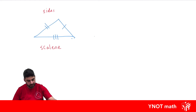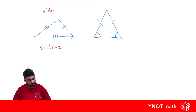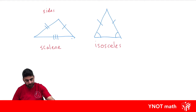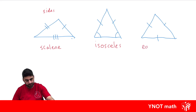Where two sides are the same and the two base angles are also equal, this is an isosceles triangle. A triangle where all the sides are equal and all the angles are equal is an equilateral triangle. All the angles in an equilateral triangle equal 60 degrees.